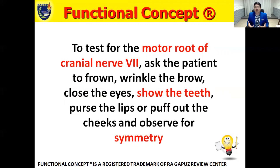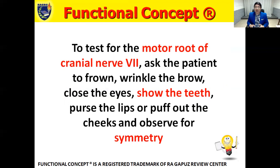This functional concept can appear as a select-all-that-apply question. For example: 'Which of the following instructions are appropriate when assessing the functions of cranial nerve 7?' Asking the patient to frown — yes; wrinkle the brow — yes; close the eyes — yes; show the teeth — yes; purse the lips — yes; puff out the cheeks — yes. But if one option is 'clench the teeth' — no, because clenching the teeth is a function of cranial nerve 5, not cranial nerve 7.